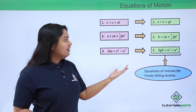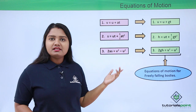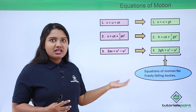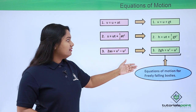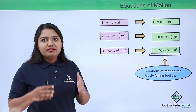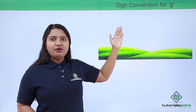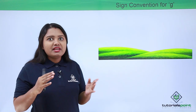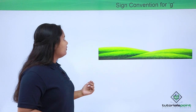These are the three equations of motion we will use whenever solving numerical problems based on freely falling bodies. We also need to know the sign convention for g — specifically, in which cases the value of g is taken as positive and in which cases it is taken as negative.